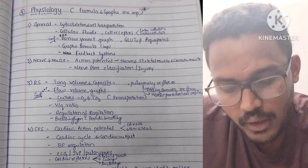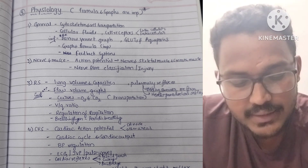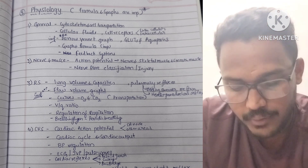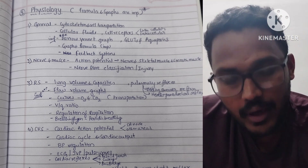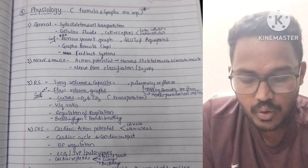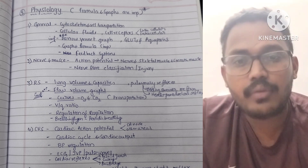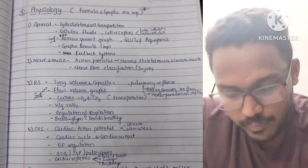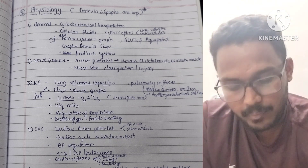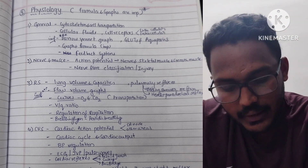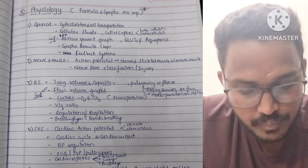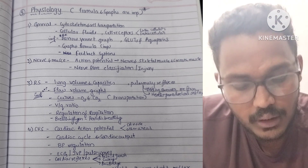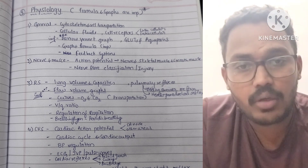In nerve-muscle physiology, action potential related to nerve, skeletal muscles, and smooth muscles is important. Nerve fiber classification and injury are important. In the respiratory system: lung volumes and capacities, flow-volume graphs, oxygen and carbon dioxide transport curves, V/Q ratio, regulation of respiration, breathing types, periodic breathing, and pulmonary reflexes like the Hering-Breuer reflex and Head's paradoxical reflex are important.